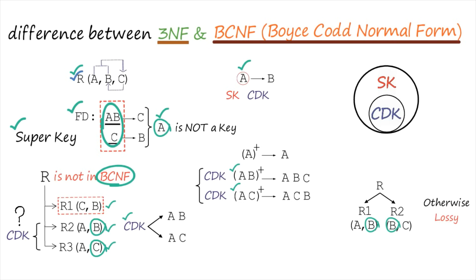To find whether a relation is in Boyce-Codd Normal Form is clear and simple: we have to prove that all left-hand sides of the given functional dependencies are candidate keys. Now there is a beautiful question: what is the difference between 3NF and Boyce-Codd Normal Form? Both definitions look the same — but there is a special distinction we are going to learn.